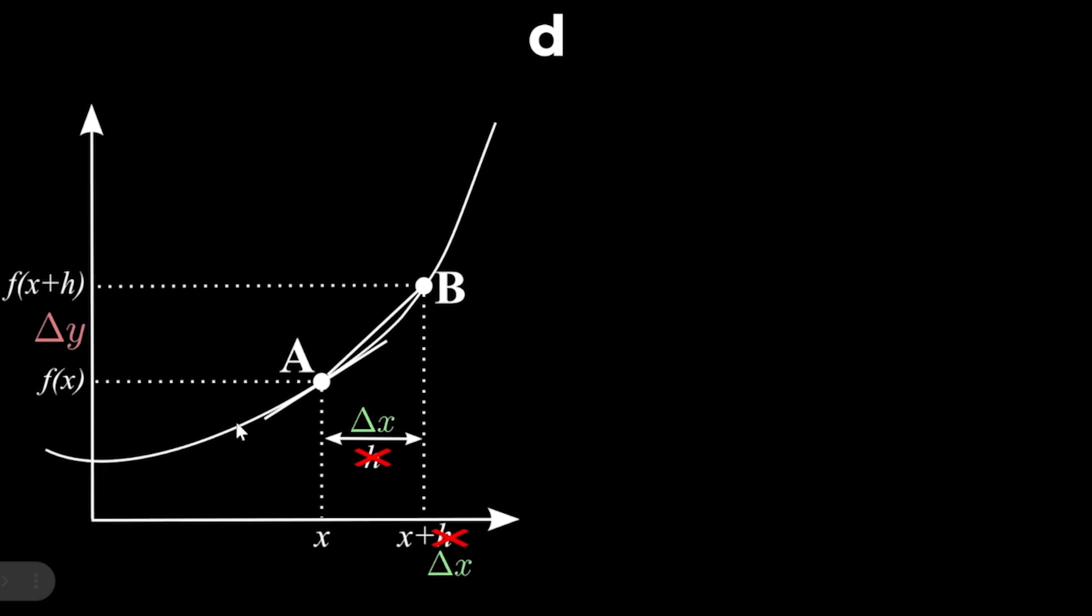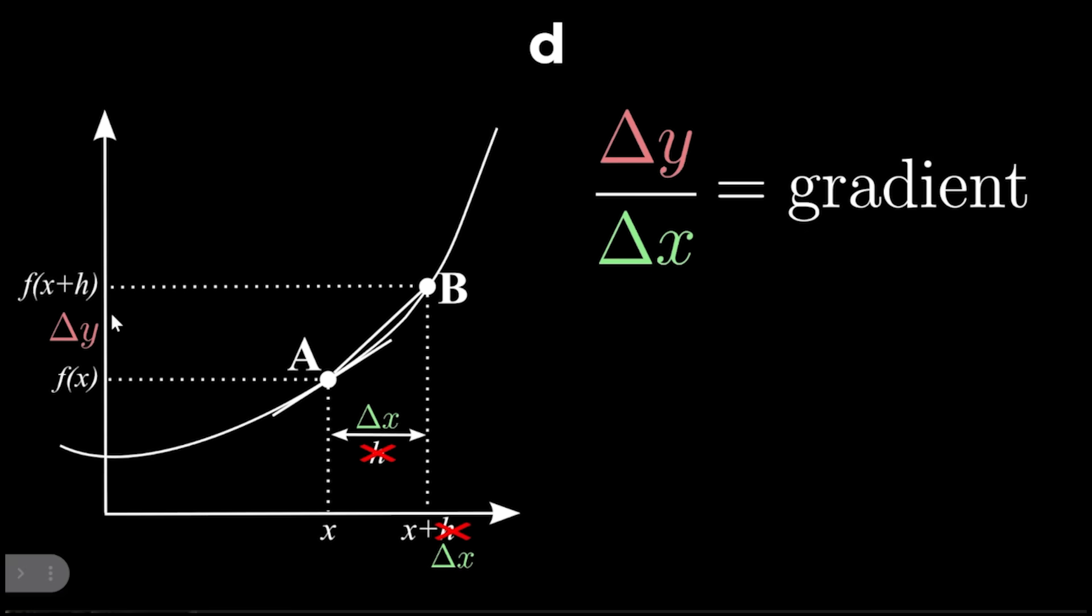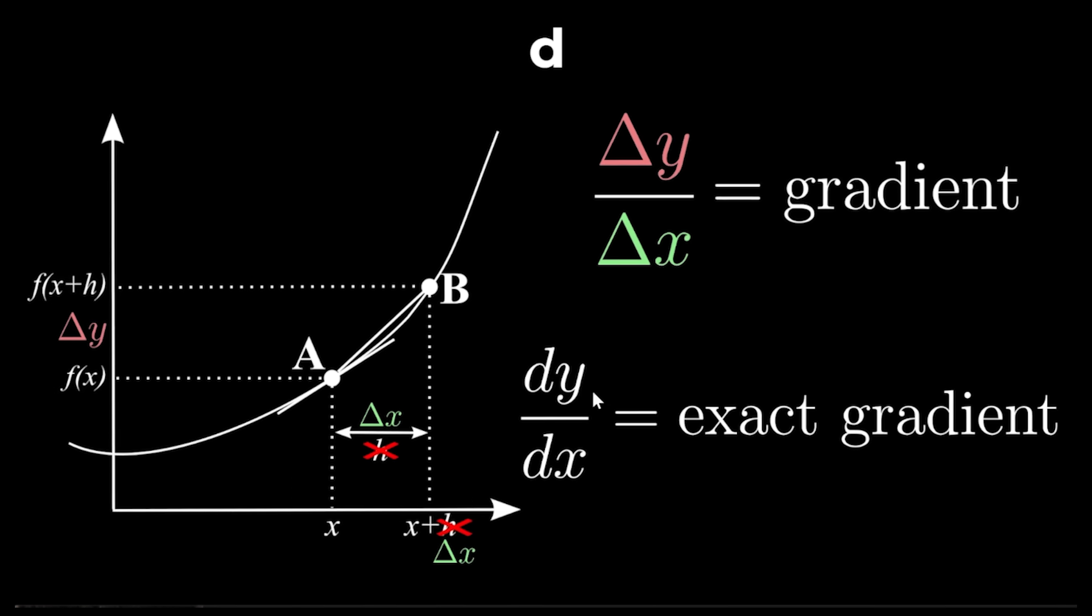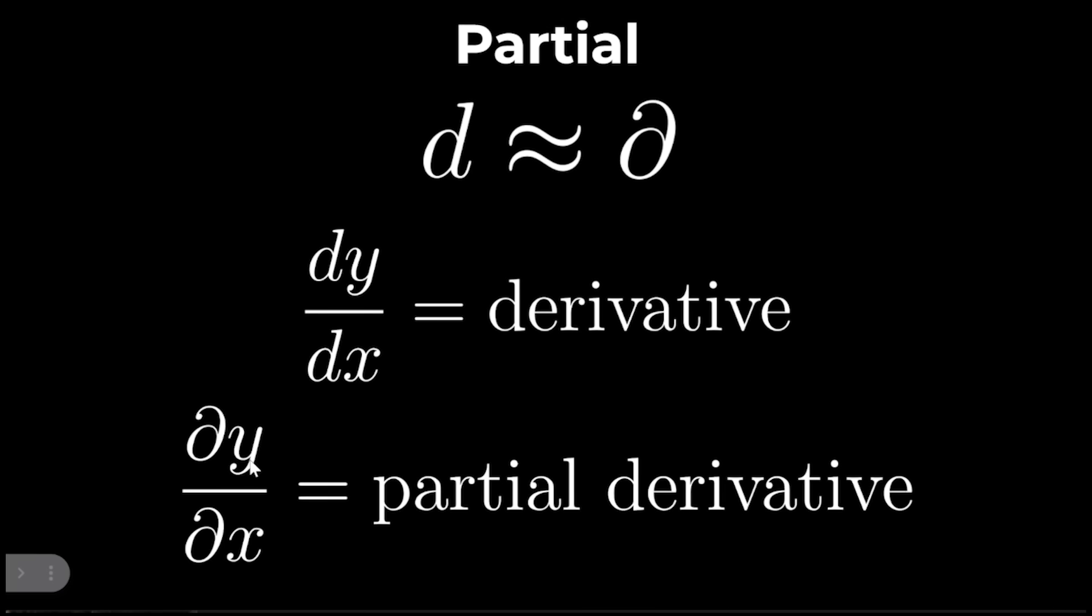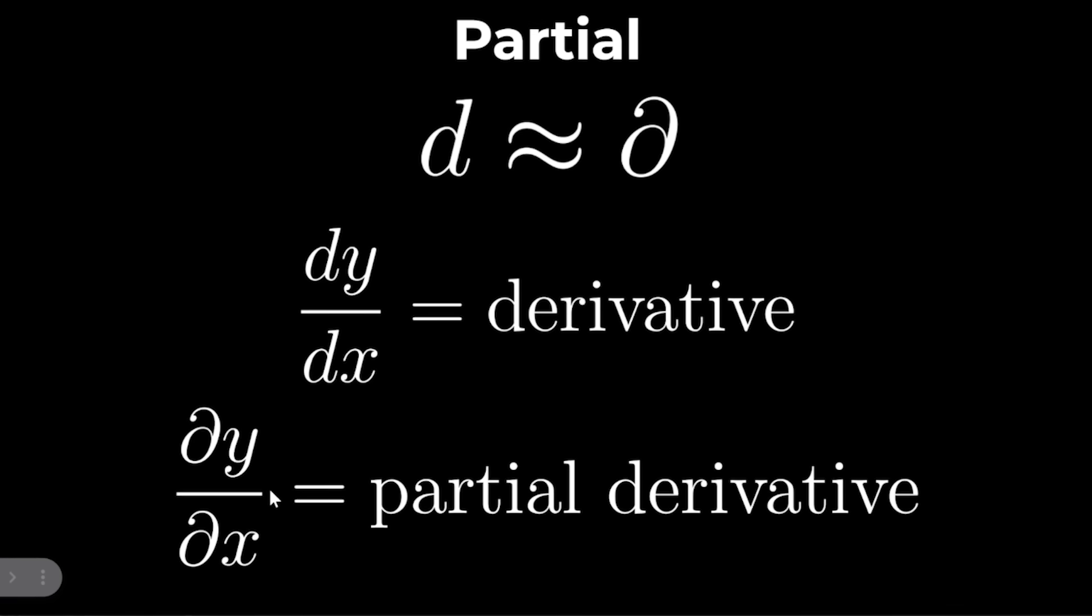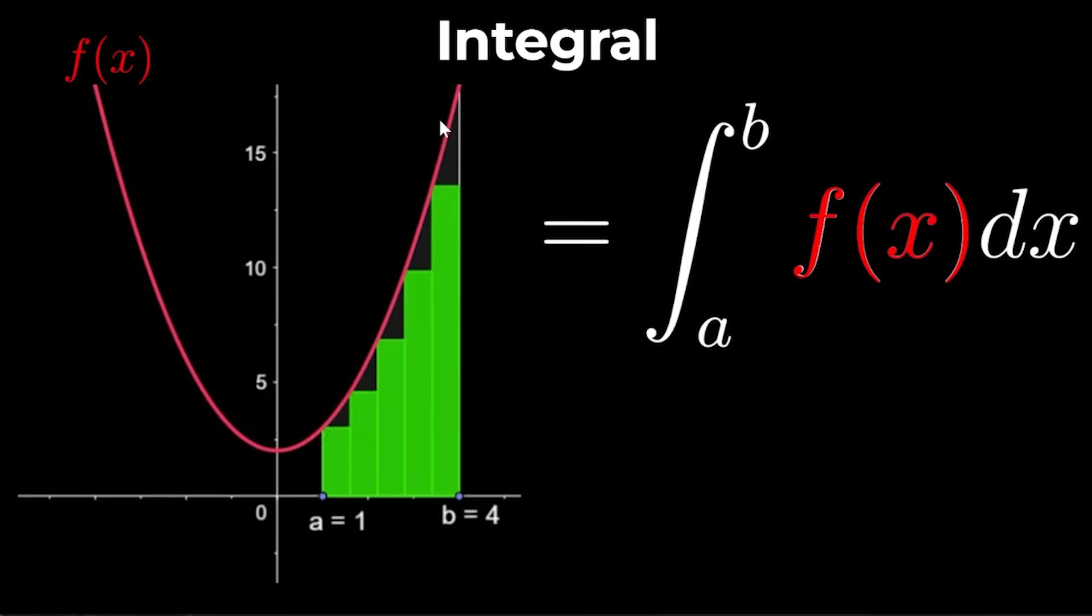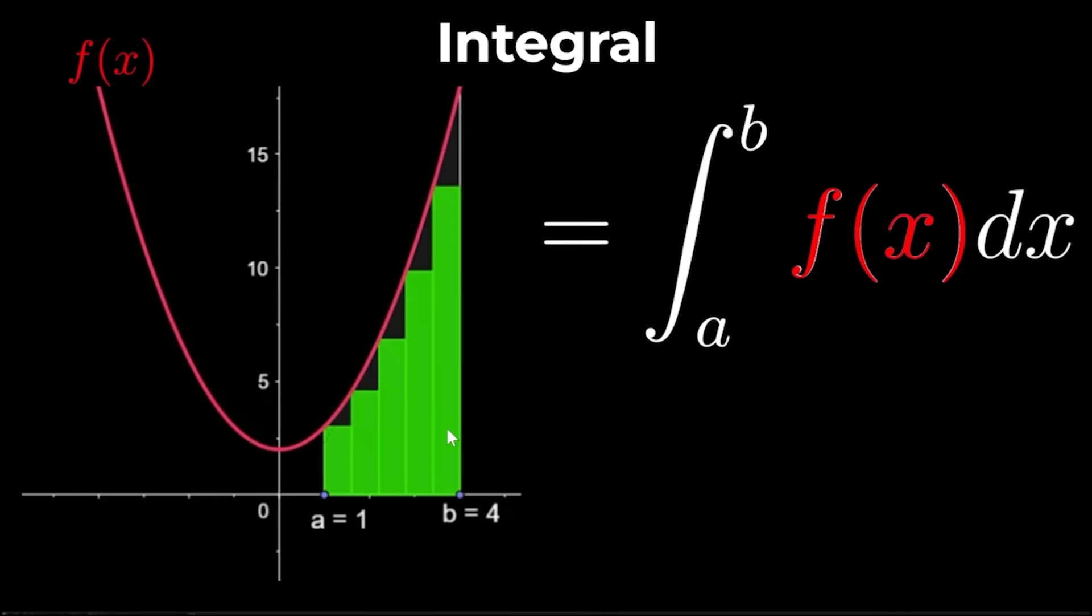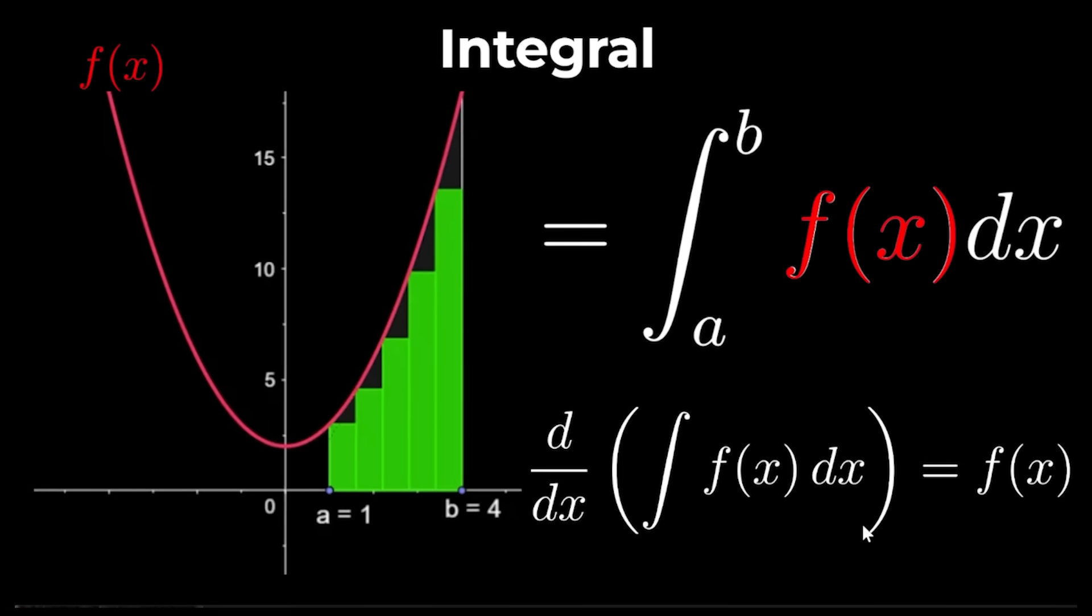Little d like delta represents the change or difference in something. But when we're dealing with curved lines the only way to find the exact gradient is to make the change in x and the change in y infinitely small. We represent this using little d. Partial is almost the same as little d but we use little d to find the derivative and partial to find the partial derivative. Which calculates the rate of change with respect to one variable while keeping all the other variables constant in a function with multiple variables. Integral calculates the area under a curve by adding together all the thin slices which make up the area. It's an elongated version of the letter s which stands for sum and it's also the inverse of differentiation.